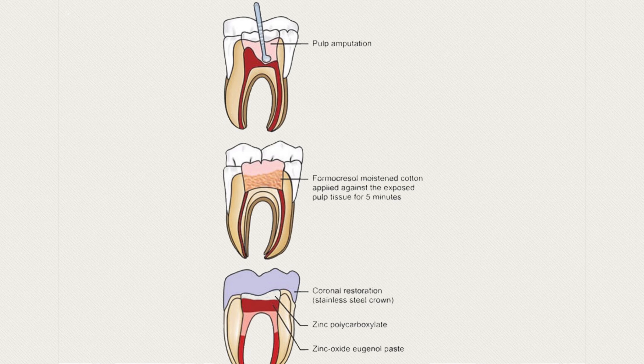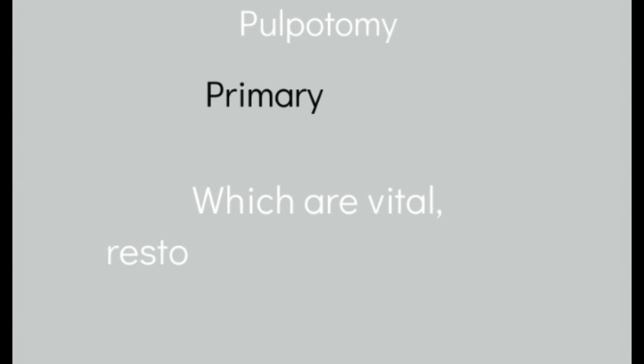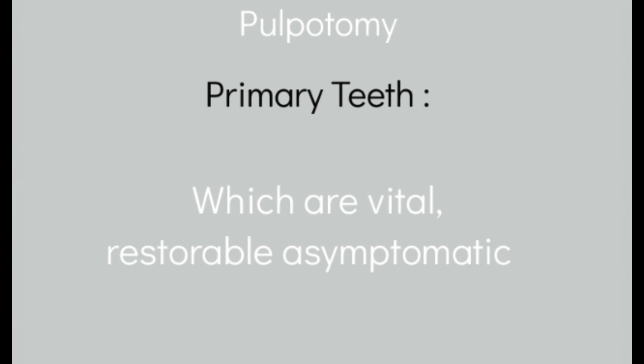Full pulpotomy involves removal of the full coronal diseased pulp — only the coronal pulp tissue, which is the crown part of the tooth. It's the treatment of choice in a traumatic exposure where the time elapsed is more than 72 hours — too far gone for direct pulp cap or CVEK pulpotomy. For primary teeth, it's performed on vital and restorable teeth, ideally asymptomatic.